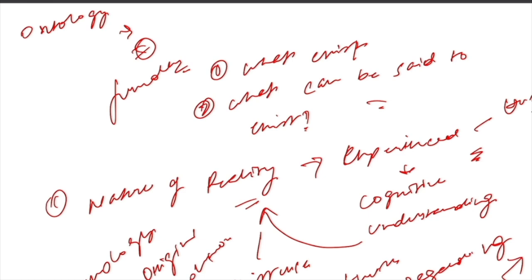For example, in traditional societies, gender division of labor and social roles — where women are often responsible for tasks like child-rearing and food preparation, while men are responsible for tasks like hunting and fishing — are studied through ontological analysis to understand how these gender divisions of labor relate to wider beliefs about the nature of men and women and their roles in society.